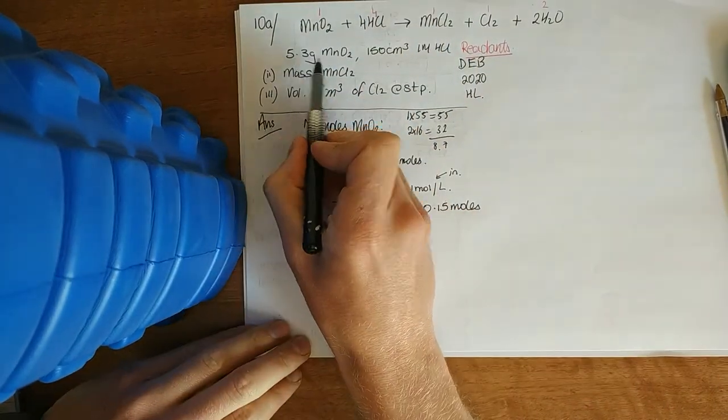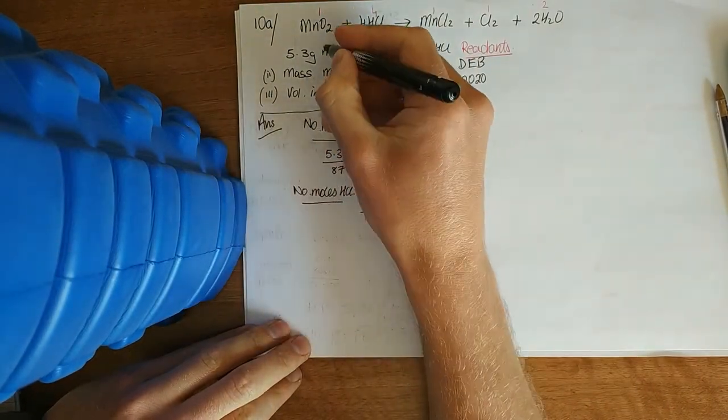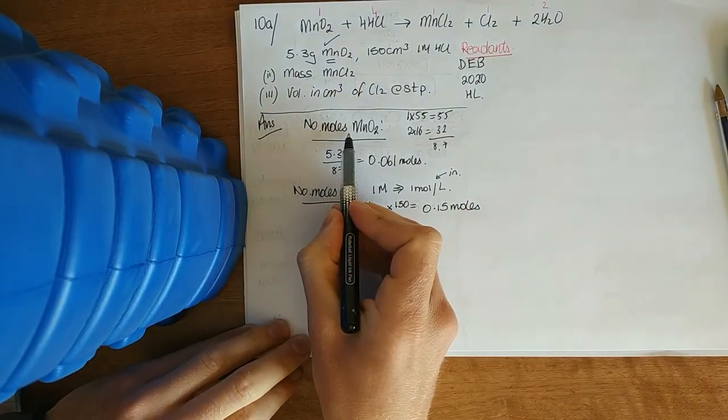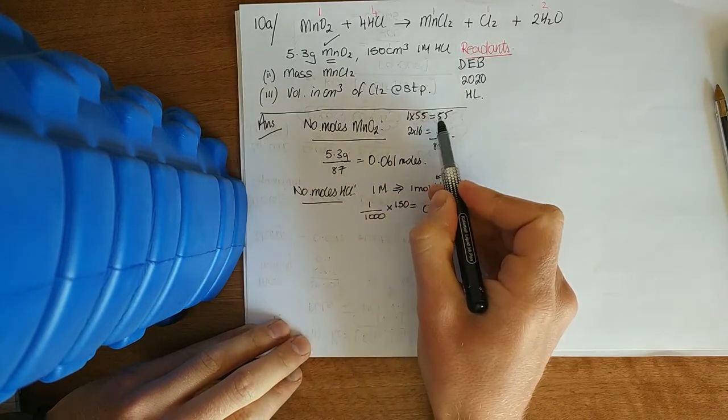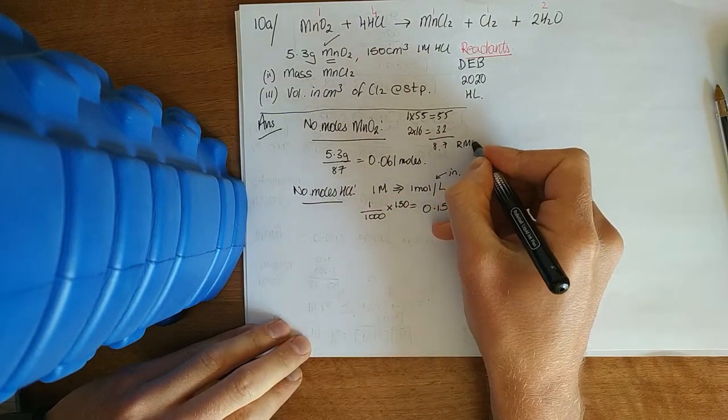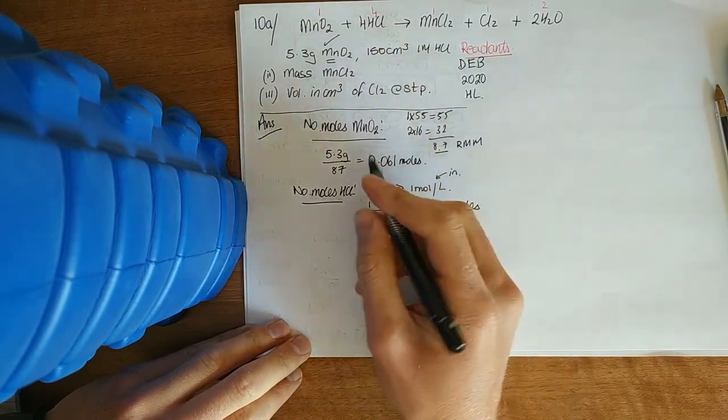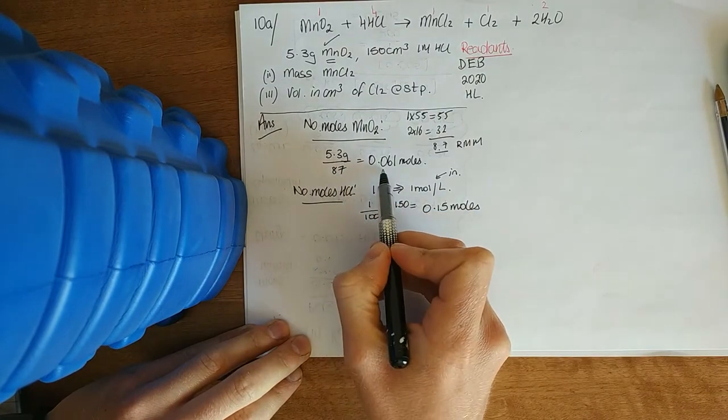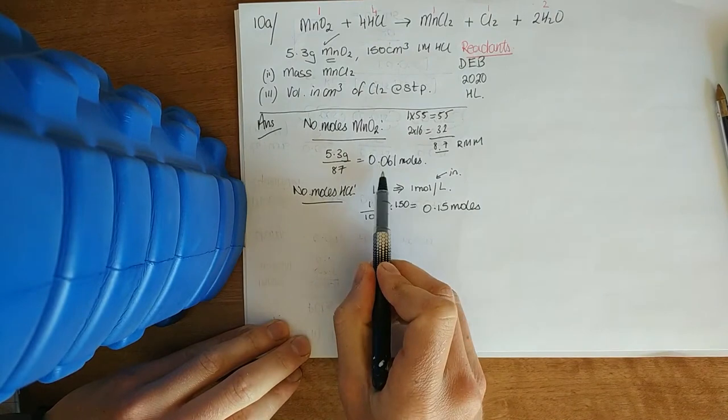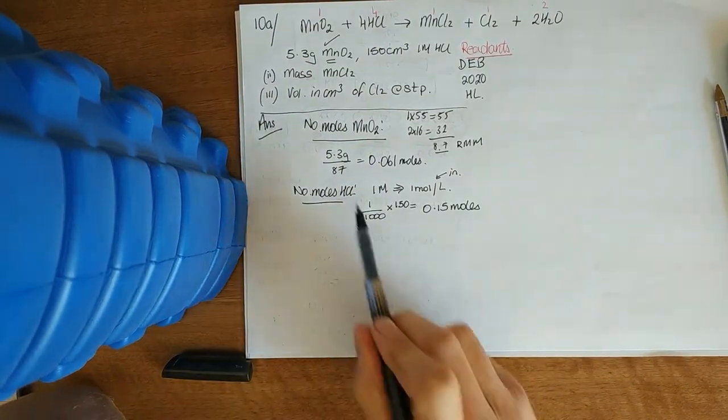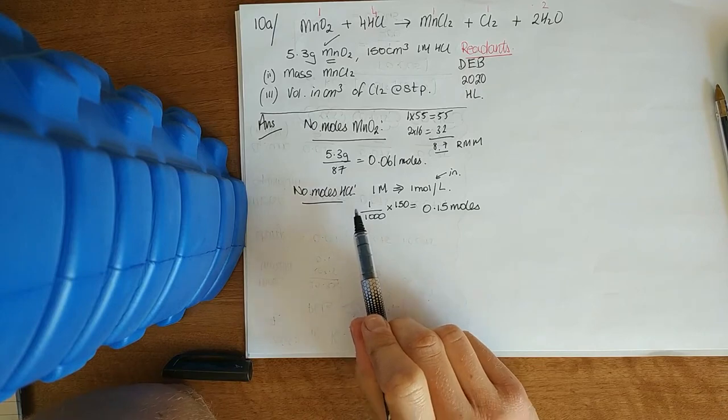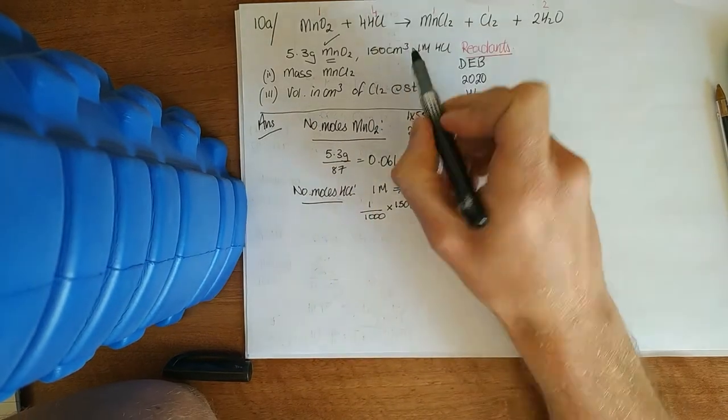So they give us 5.3 grams of manganese dioxide, MnO2, a D block transition element. So that's the first thing I did. Number of moles of MnO2, worked out its relative molecular mass of MnO2 and then we're going back to moles, we're dividing. So 5.3 divided by 87 give me this. It was a massive number. I think it worked out as 530 or 53 over 870 or something like that.